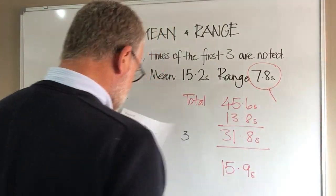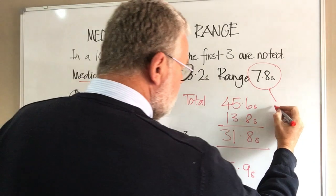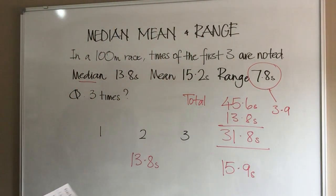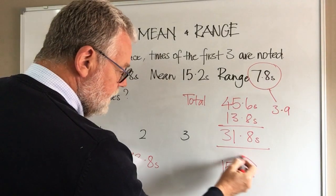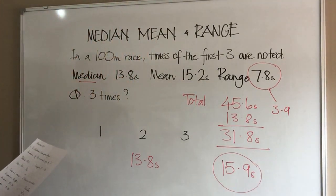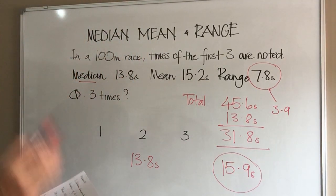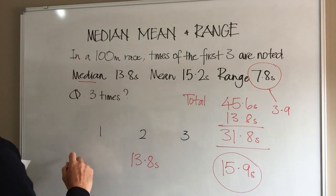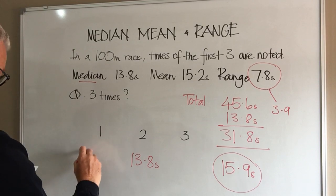The way I do it is I split that in half, which gives me 3.9. Sorry, I go back to this time we just worked out for the other two runners. If I take 3.9 away from that one, that gives me 12 seconds.